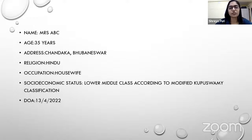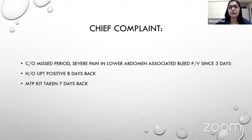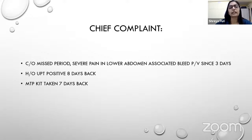Her date of admission was 13th April. Her chief complaint was that she had missed her period and complained of severe pain in the lower abdomen on the left side, associated with bleeding per vagina since two days. She had a history of UPT positive eight days back, following which she had taken an MTP kit seven days back from a pharmacy.